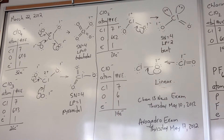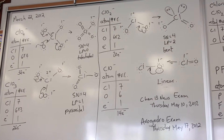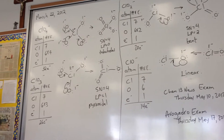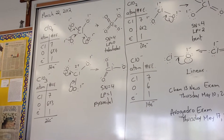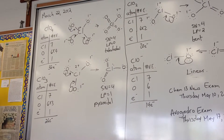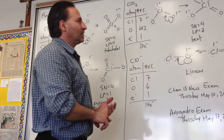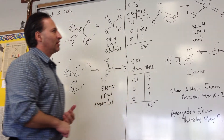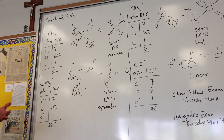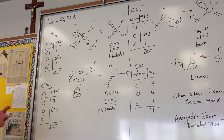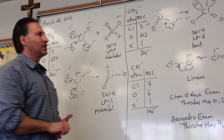On last night's homework, you were assigned to write the geometric structures predicted by VSEPR theory for the chlorate series of anions: perchlorate, chlorate, chlorite, hypochlorite, and I threw in there chlorine dioxide.